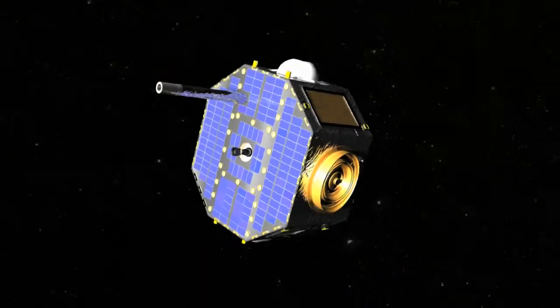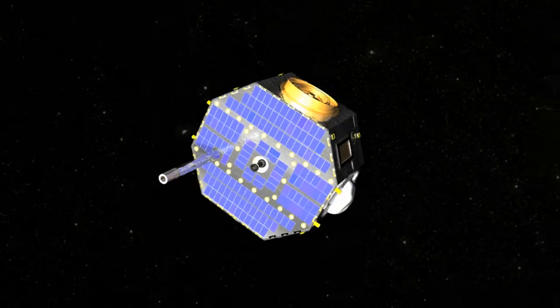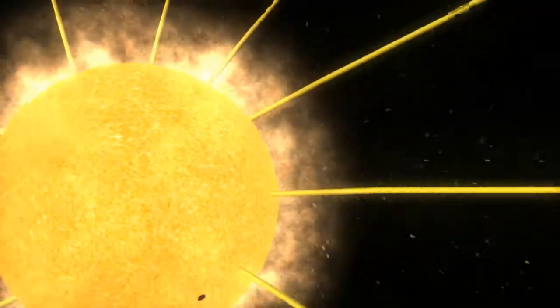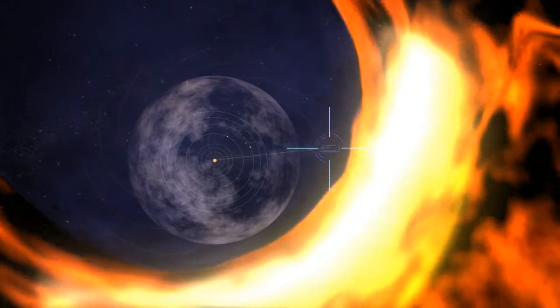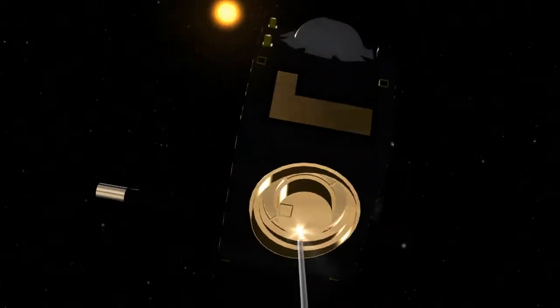IBEX is also different because it makes its images from particles instead of light. Some of the atoms it detects originally came from the Sun as charged particles, traveled out to the heliosheath, bounced back, and gained electrons to make them neutral.